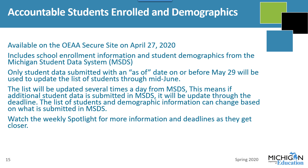Accountable Students Enrolled in Demographics is the screen in the OEAA Secure Site where you can look at the list of students who are expected to test for your school or district for accountability ratings. The demographic information for students is also on this page. You need to go to this page to verify the names and information are correct, beginning April 27. The data on this screen comes from the Michigan Student Data System, or MSDS. The students listed here will be included in accountability calculations, so it is important that you verify the information.